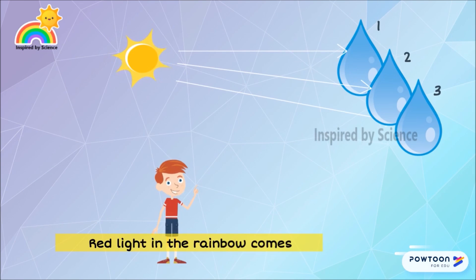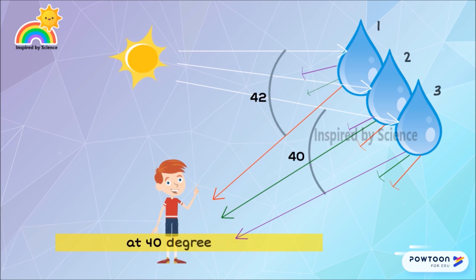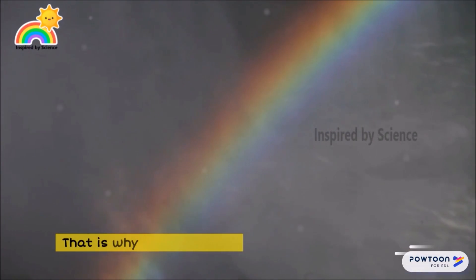Therefore red light in a rainbow comes from the highest water drops that have refracted incident sunlight at an angle of 42 degrees from the line of sight. Red light in the rainbow comes from the lowest water drops that are bent in 40 degrees angle. That is why red light is always on top of a rainbow.